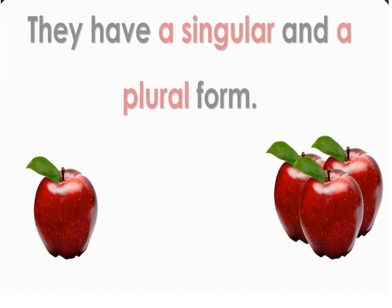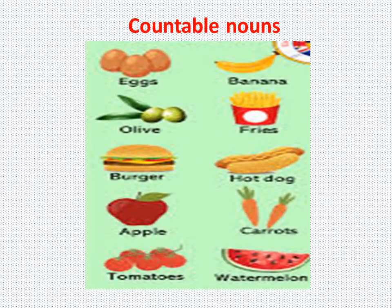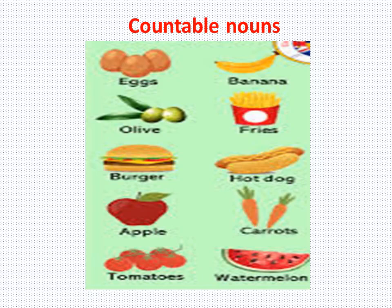Countable nouns have a singular and a plural form. Here you can see one apple and three apples. Here are some examples of countable nouns. Let's see: eggs, banana, fries, burger, hot dog, apple, carrots, tomatoes, and watermelon. All these nouns come under countable nouns.